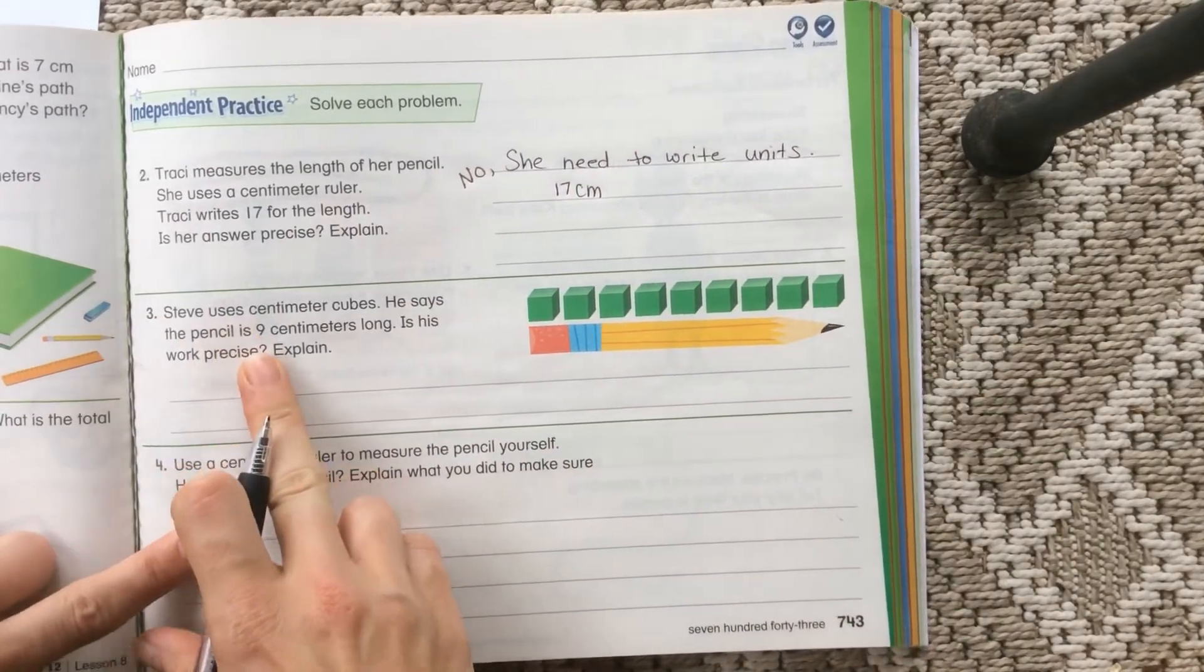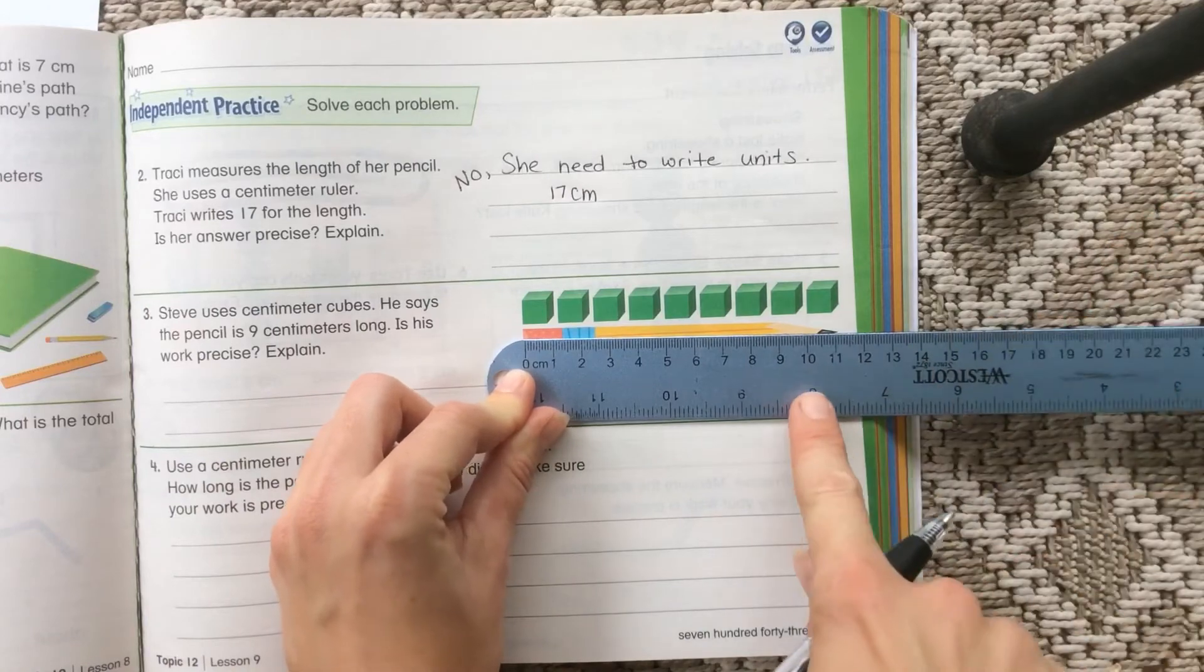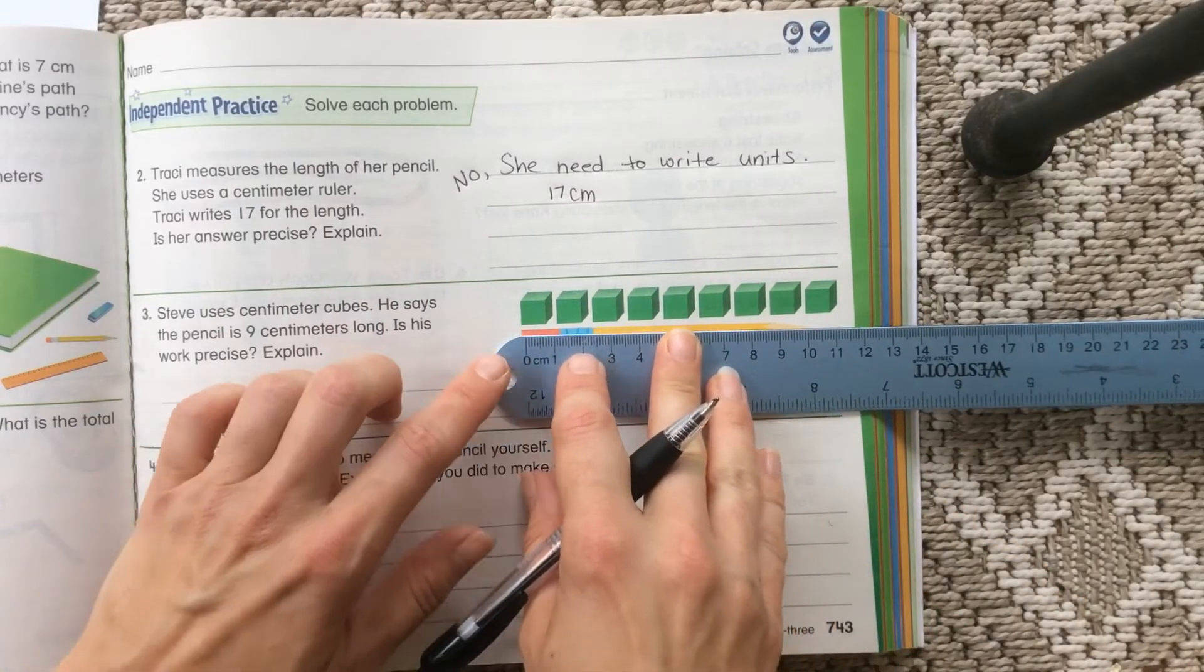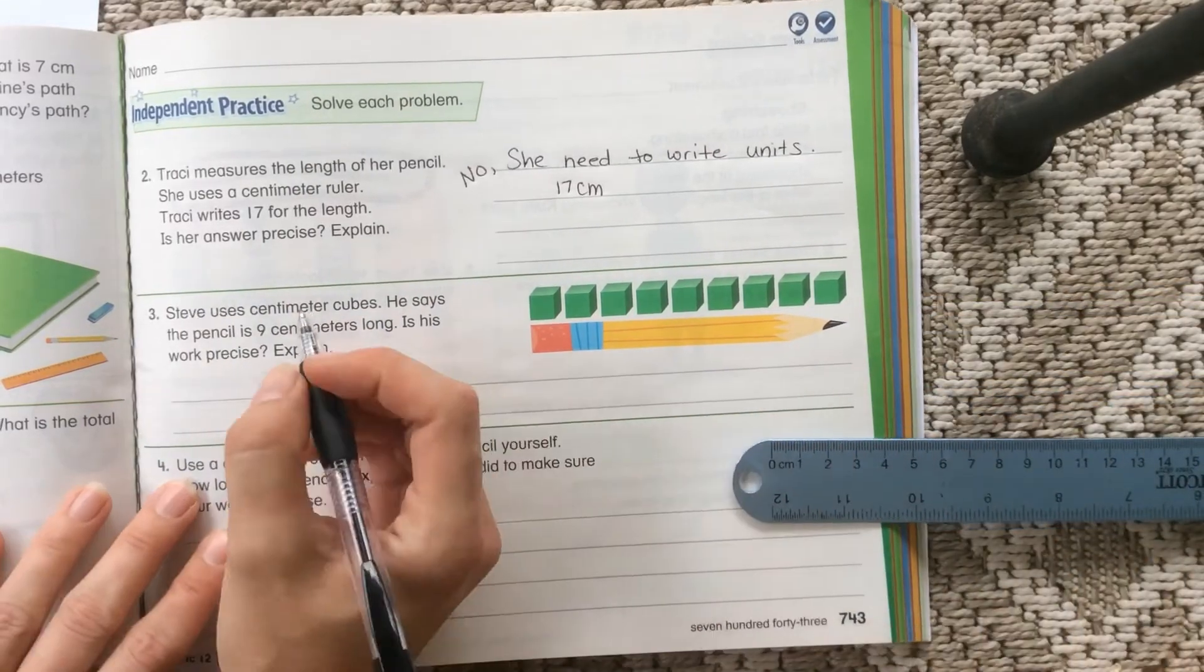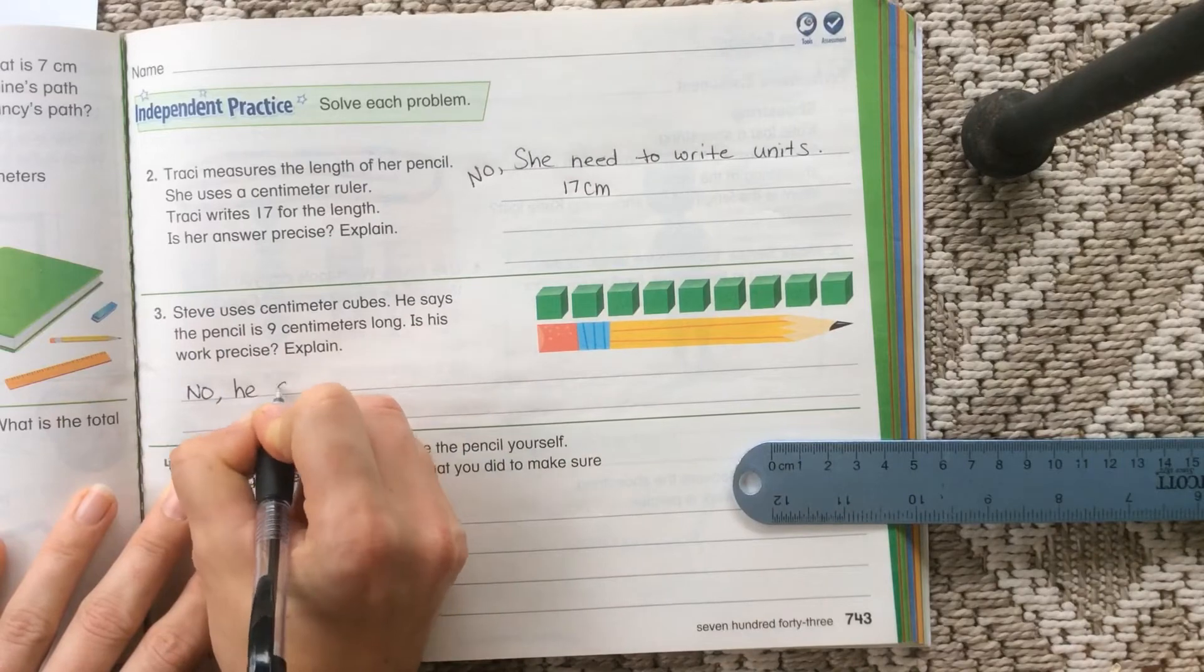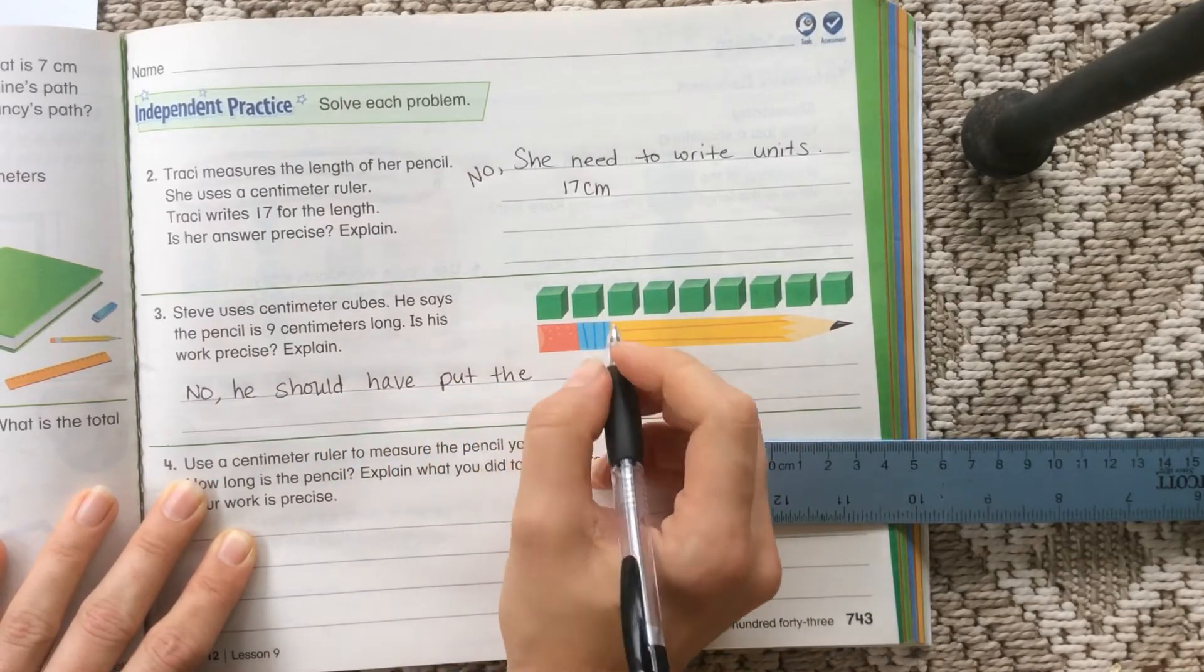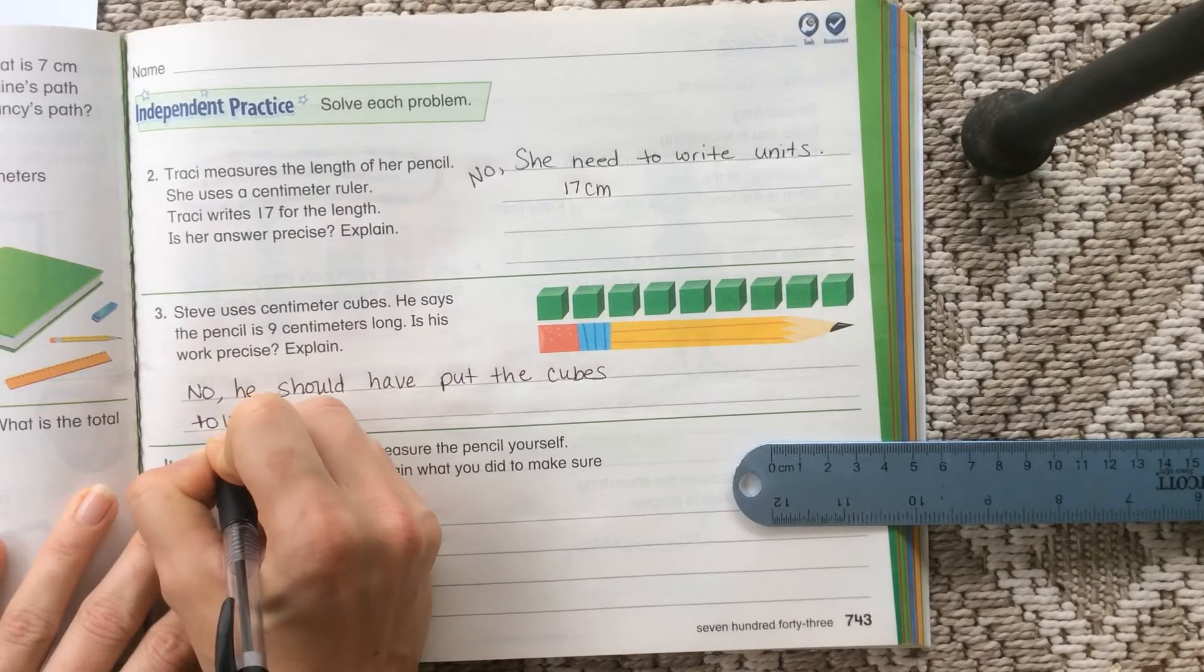Steve is using centimeter cubes. He said the pencil is nine centimeters long. Is his work precise? Again, I had friends in class that would line up zero. And if we look at that, it really isn't precise. But it's not because he got the wrong answer. What did he do with the cubes? What is going on with those cubes? Because if those cubes are each a centimeter, which they are, he should be able to get an accurate measurement. So what did he do wrong? We can put no. We know his work is not precise. He should have put the cubes right next to each other, or maybe he could use a ruler instead. Maybe I'll put touching each other. That sounds good.